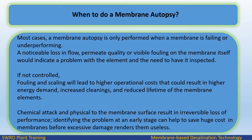When to do a membrane autopsy? In most cases, a membrane autopsy is only performed when a membrane is failing or underperforming. A noticeable loss in flow, permeate quality, or visible fouling on the membrane itself would indicate a problem. If not controlled, fouling and scaling will lead to higher operational costs, higher energy demand, increased cleanings, and reduced lifetime of the membrane elements. Chemical attack and physical damage to the membrane surface result in irreversible loss of performance.